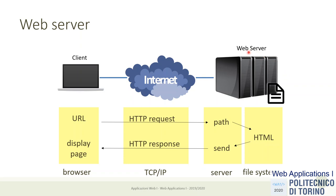How do the client and server communicate? Through the HTTP protocol. Every time a client needs an address — whether typing in the address bar or clicking a link — the browser sends a data packet called an HTTP request directed to the server's IP address, containing the path of the resource. The web server locates the file and sends it back packaged as an HTTP response.